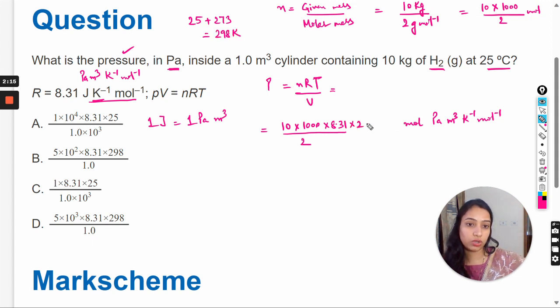So here we will write 298 and its units kelvin. And in the denominator, volume we have to write. So volume is 1 meter cubed. Here also we will write the units.